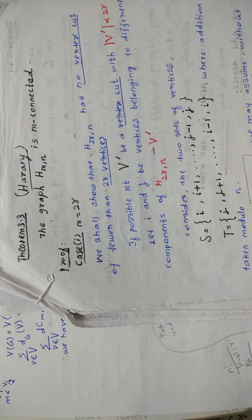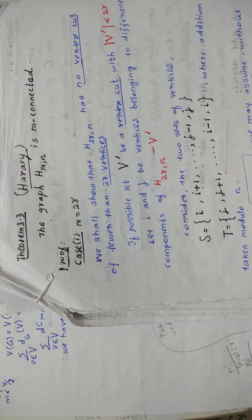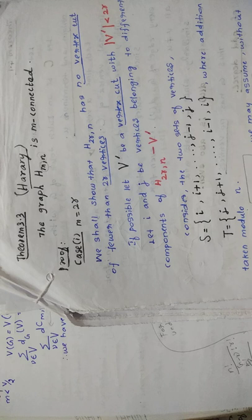I will tell you what is meant by M-connected. Imagine a graph. In that graph, if you are removing M number of vertices and the graph will be disconnected, then you can say that graph is M-connected. For example, if you want to say a graph is 2-connected, if you remove 2 vertices from the graph and the graph becomes disconnected, then you can say that graph is 2-connected.